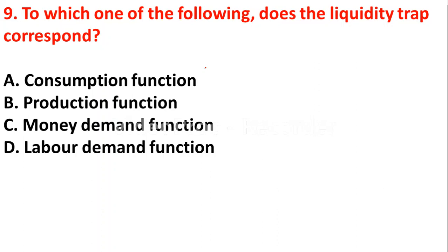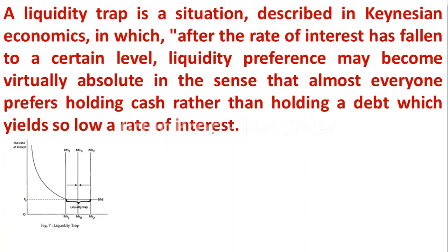The next question: to which one of the following does the liquidity trap correspond? Option A: consumption function; Option B: production function; Option C: money demand function; Option D: labor demand function. Liquidity trap corresponds to the money demand function. Liquidity trap is the situation where, after the rate of interest has fallen to a certain level, liquidity preference may become virtually absolute — people hold cash rather than debt because of the low interest rate.